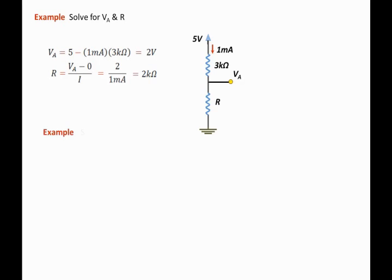Let us have another example. In this example we would like to solve for VA and R. This example has two power supplies. The top power supply has a positive value which reads 5 volts, and the bottom power supply is negative value and that reads negative 5 volts.